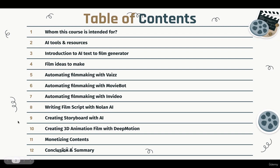Chapter nine is the third project: creating a storyboard with AI. We'll use two tools — Crot.io and Storyboard That. Just type in what storyboard you want, click generate, and in less than a minute AI generates the storyboard you want.